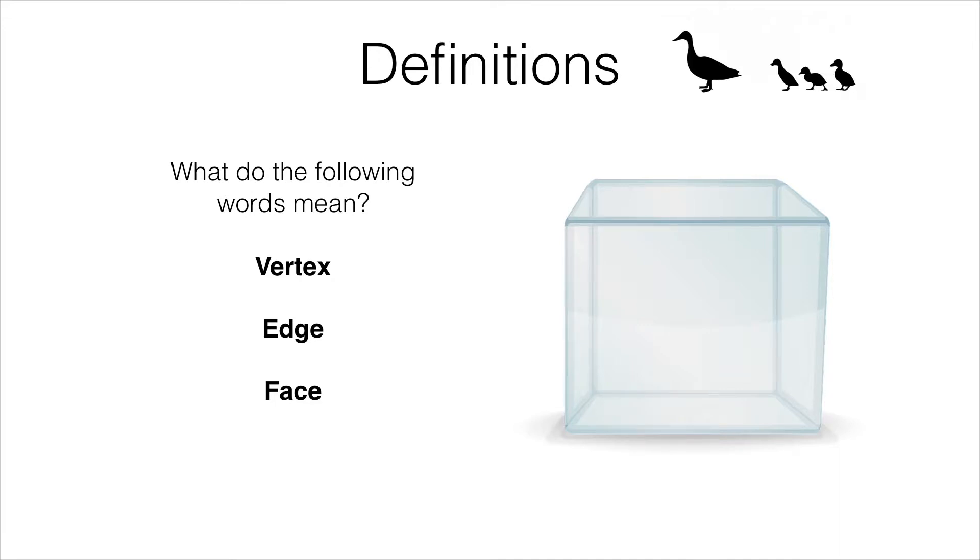Once we appreciate that, it's easy to understand what vertices and edges are. We know from lesson G1A that edges form the boundaries of 2D objects. So these are edges of a face and therefore they are edges of the 3D object as well. This cube has 12 edges altogether. I'll highlight these here in green.